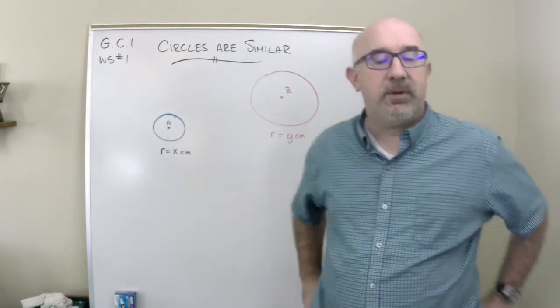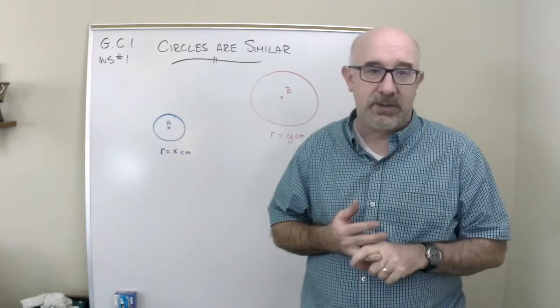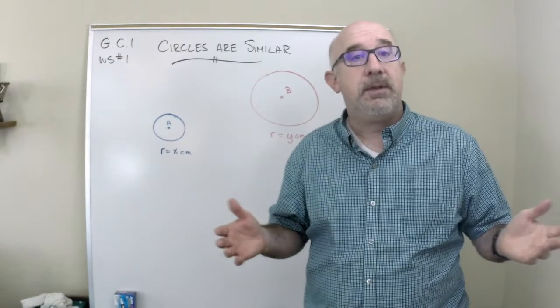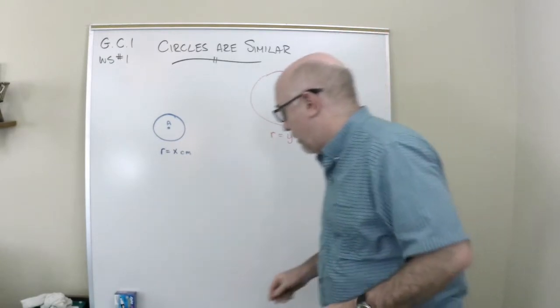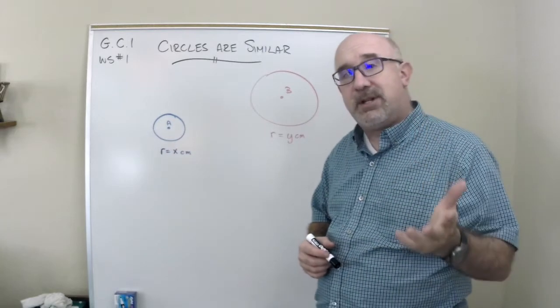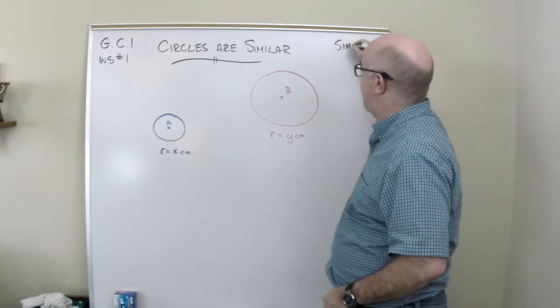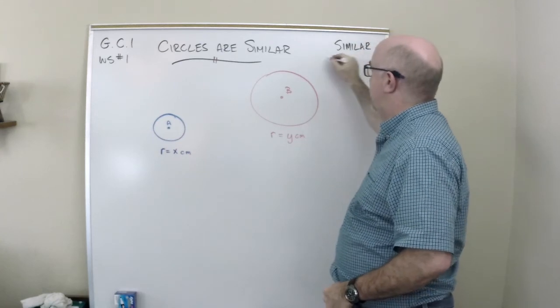Now, similar is not a new topic to us. We've already talked about similar shapes and polygons, similar triangles. We've looked at proving things to be similar, and what we learned in those cases is if you're trying to establish two things to be similar, you're going to use similar transformations.